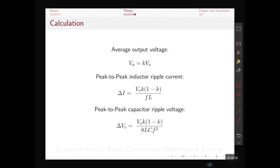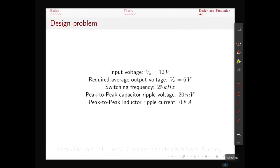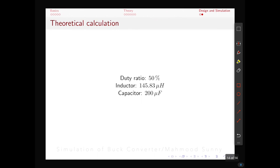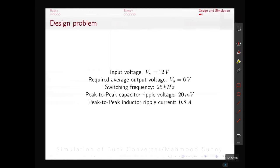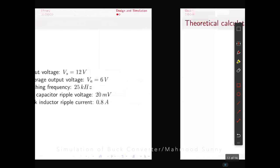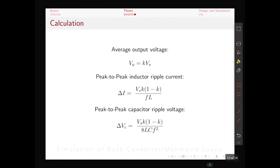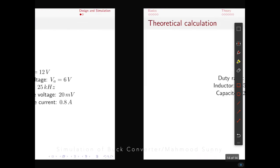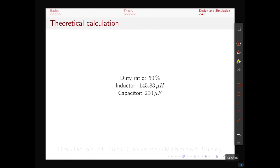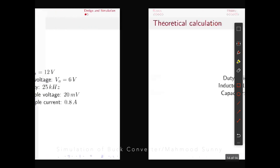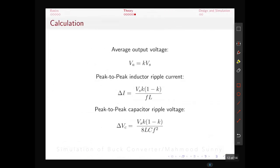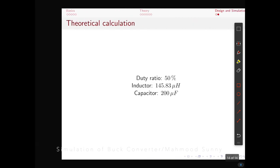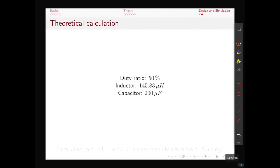If we use these formulas, these three formulas, we can calculate the values for inductor, capacitor and duty ratio. The duty ratio has to be 50 percent. And if we use this formula for delta I, we can calculate the value for inductor which becomes 145.83 microhenry. And using this formula for delta Vc, we can calculate the value of capacitor and it is 200 microfarad. So let's go and simulate our buck converter circuit.